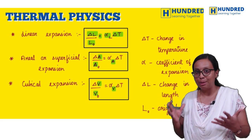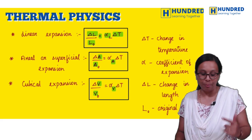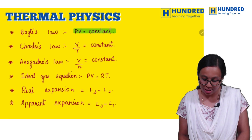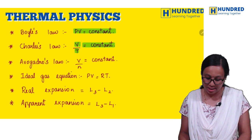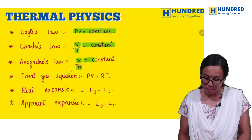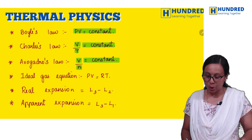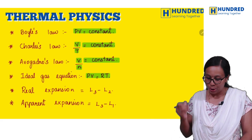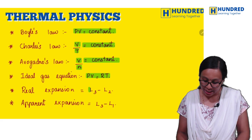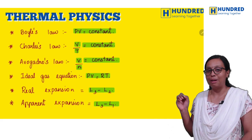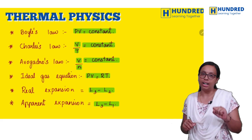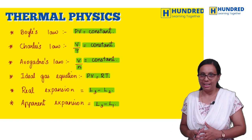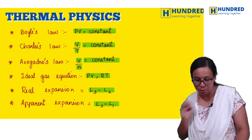Then we have three important laws: Boyle's law PV equals constant, Charles's law V by T equals constant, Avogadro's law V by N equals constant. And then for seven mark question, ideal gas equation PV equals RT. Book will have problems on real expansion and apparent expansion. That formula is L3 minus L2 for real expansion, L3 minus L1 for apparent expansion.